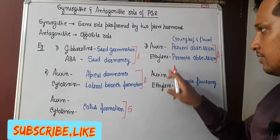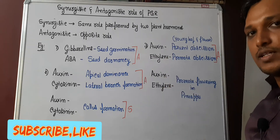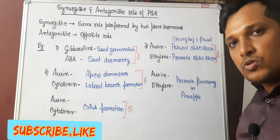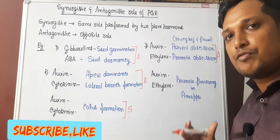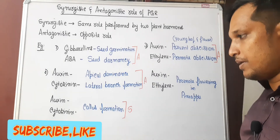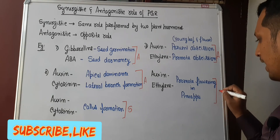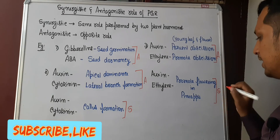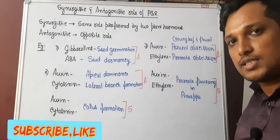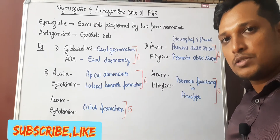Auxin and ethylene also have a synergistic function: both hormones together stimulate the formation of flowers in pineapple. Hence, this is the meaning of antagonistic and synergistic functions. I hope you have understood. Thank you for watching.